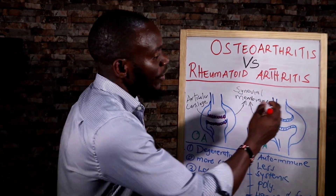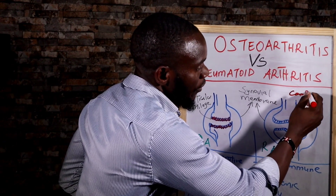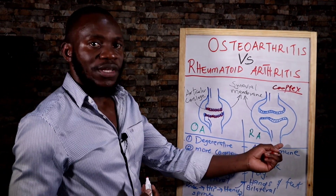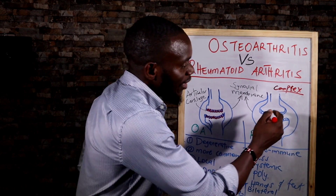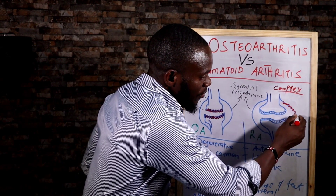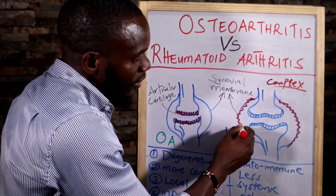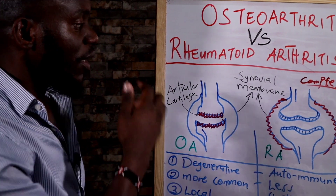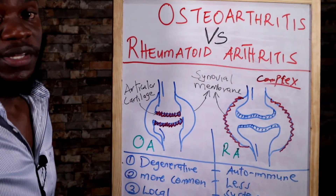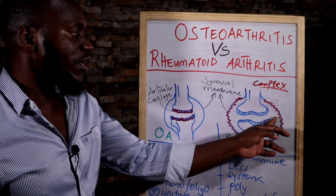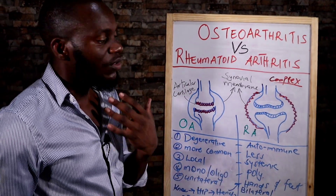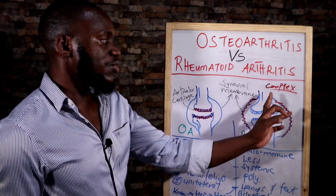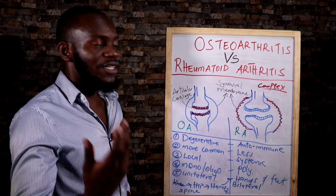Rheumatoid arthritis is different. Here there is formation of an immune complex due to immune reactions. This complex comes and destroys the synovial membrane. Once it destroys that membrane, you start feeling pain and inflammation because the bone is now exposed to friction. This requires an immune reaction, formation of a complex, and then destruction of the synovial membrane. That is the difference — rheumatoid arthritis is systemic, osteoarthritis is local.